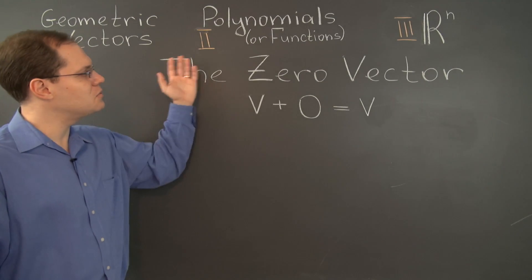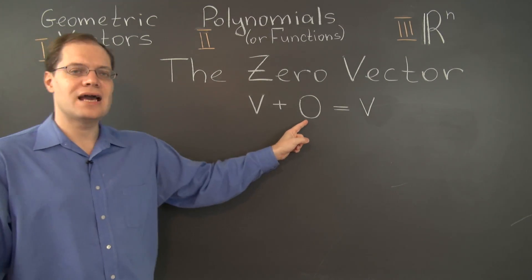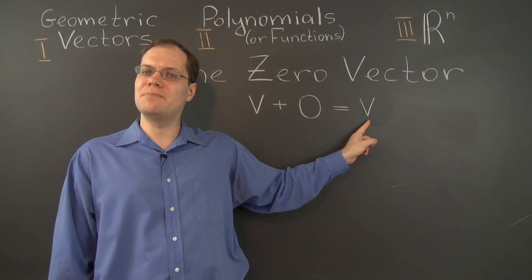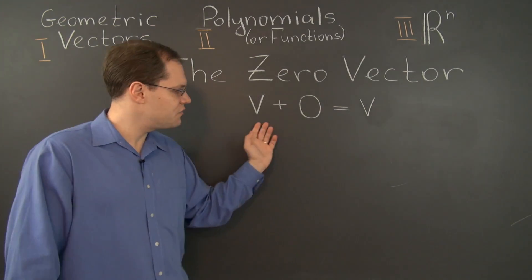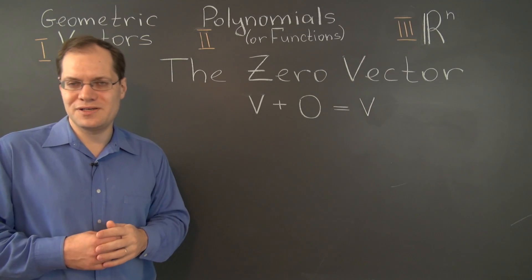Every vector space, including the ones we've been focusing on, has one zero vector, and it is defined by the property that if you add it to any other vector, that vector remains unchanged. This is a familiar identity and it's very consistent with what we typically mean by the word zero.